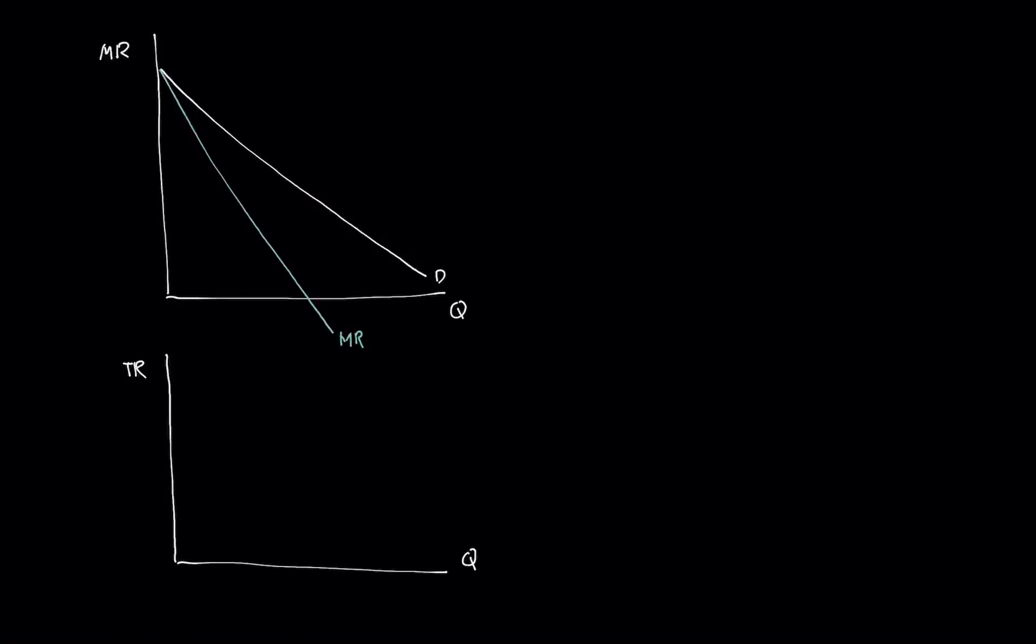So the total revenue curve, notice has a big relationship with marginal revenue. So if you notice, from here to here, marginal revenue is positive. And from here to here, essentially going down further, marginal revenue is negative.